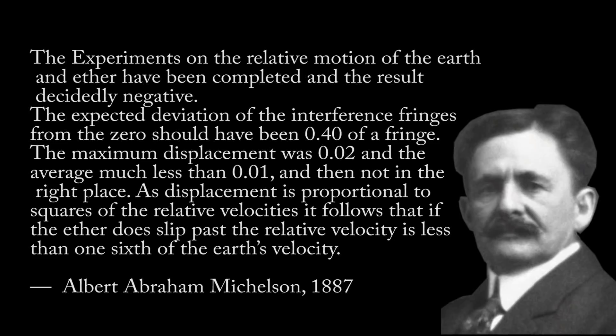This is an experiment that was very foundational towards the forming of modern-day physics, because it failed. In Michelson's own words, the experiments on the relative motion of the Earth and ether have been completed, and the result decidedly negative. The expected deviation of the interference fringes from the zero should have been 0.4 of a fringe, and the maximum displacement was recorded to be 0.02, and the average much less than 0.01. The results showed that there was way, way less of a change in the speed of light based on where the Earth was positioned than what should have been there.